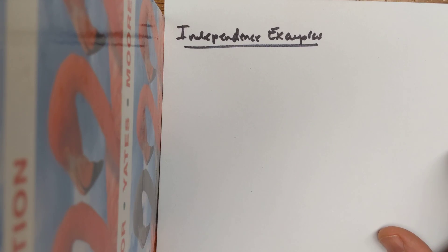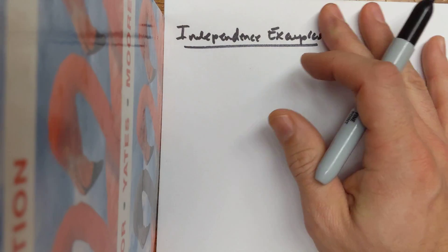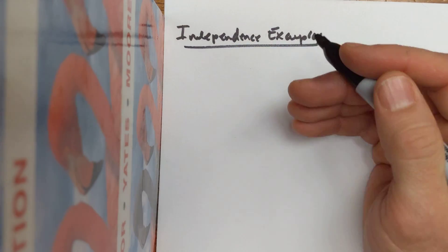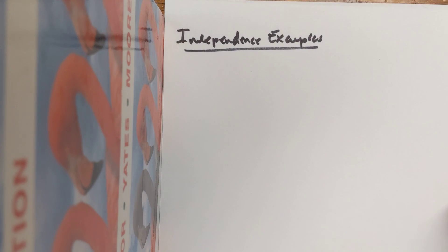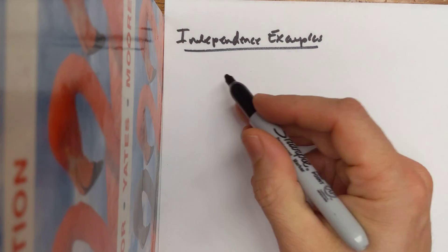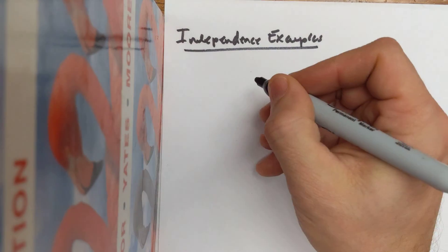Hey, mathematicians. I thought we could just do a couple of examples that are sort of what I consider almost like algebra probability examples, using some fundamental ideas of independence.